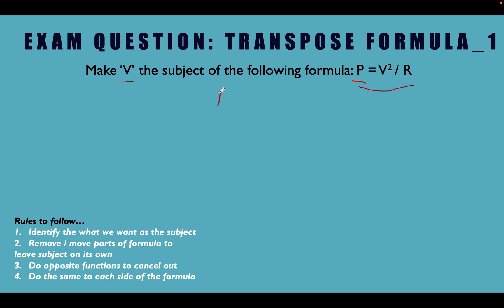Right, so let's write it out to start with. What we're starting with, P equals V squared divided by R. So what we need to do, like we said, is get this guy on its own, V.